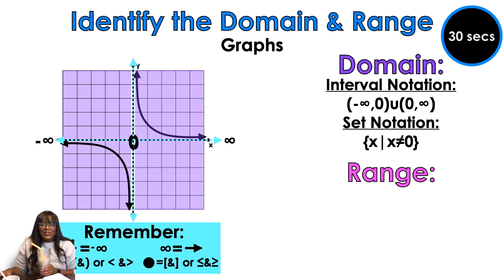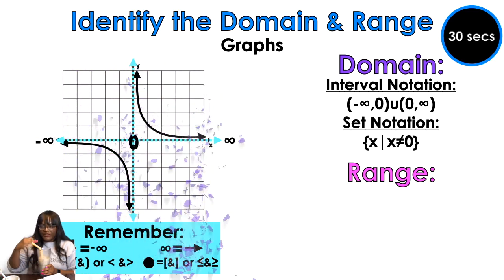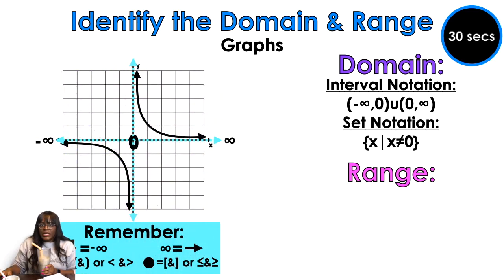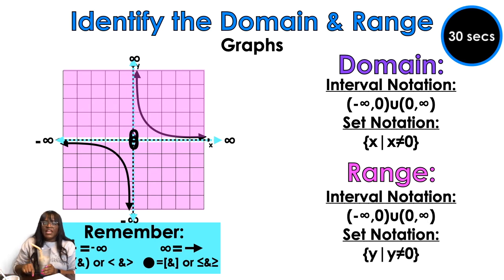The range is similar. The range is going to go from negative infinity up to zero, and then start at zero and go all the way to infinity — there's a little gap in the middle. In interval notation and set notation: negative infinity to zero in union with zero to infinity — the same as the domain. In set notation: y cannot equal zero.